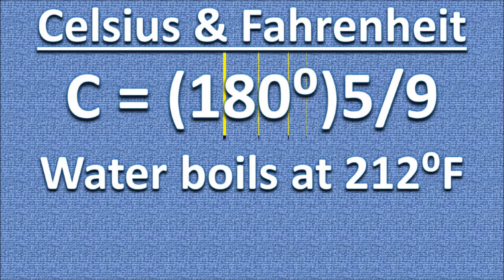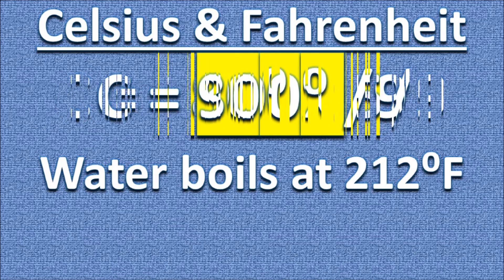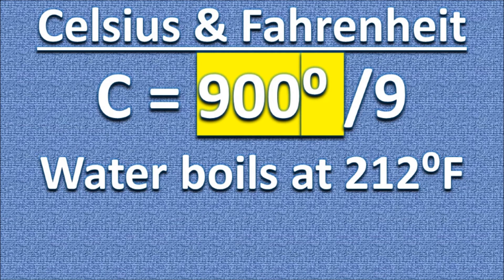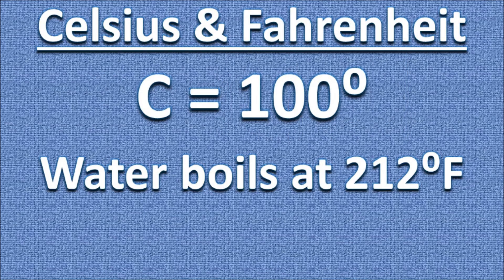Here is why we move the fraction to the right side of the formula. You simply multiply by 5 and divide by 9. So water boils at 100 degrees Celsius, which is equal to 212 degrees Fahrenheit.